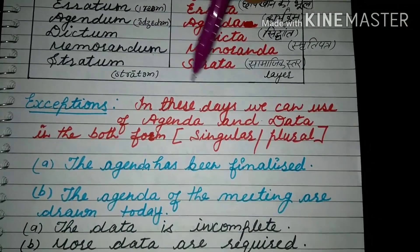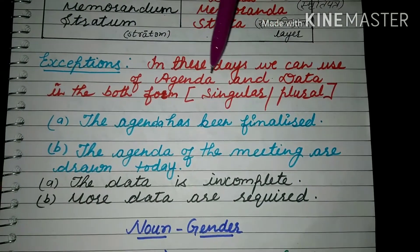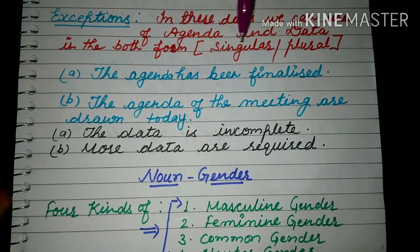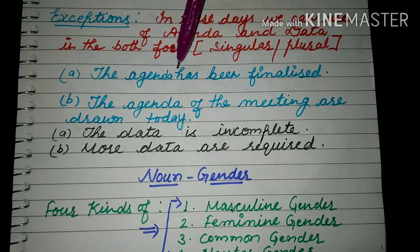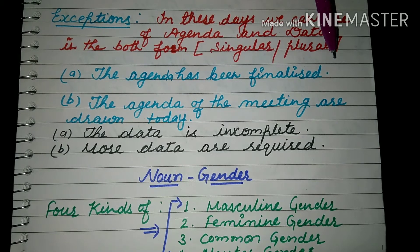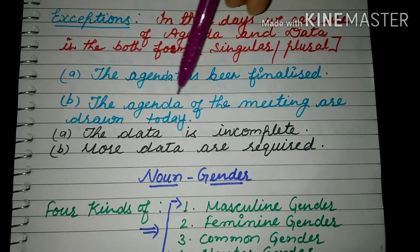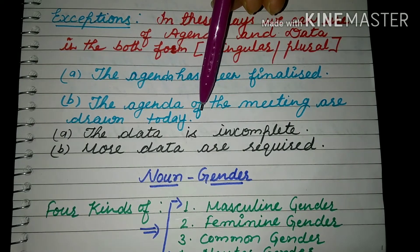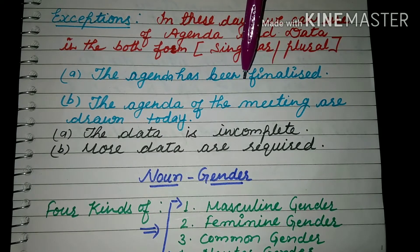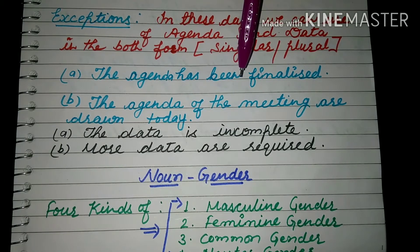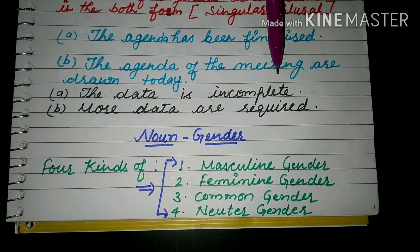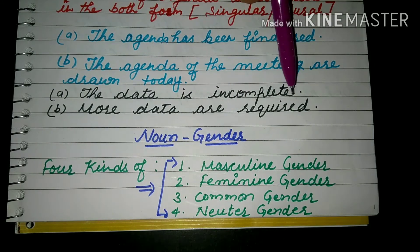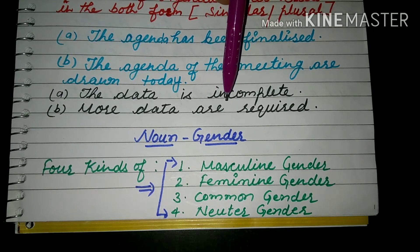Some exceptions are also there. In these days, we can use 'agenda' and 'data' in both singular and plural forms. For example: 'The agenda has been finalized' (singular) and 'The agenda of the meeting are drawn today' (plural). Similarly: 'The data is incomplete' (singular) and 'More data are required' (plural). So we can use both singular and plural.